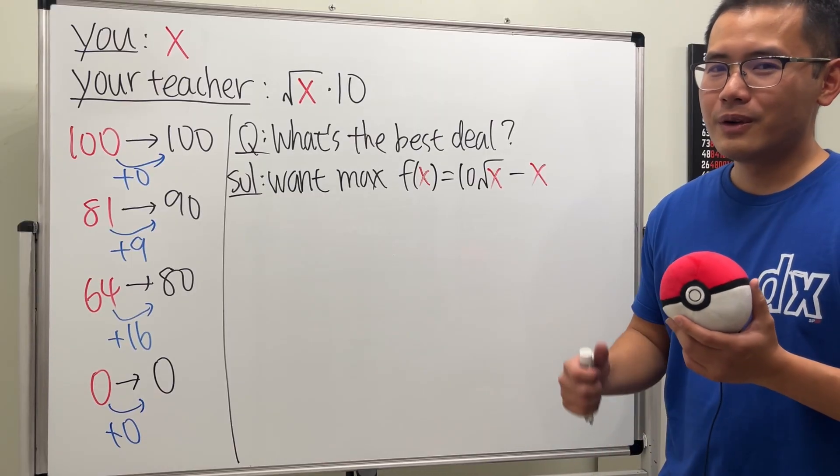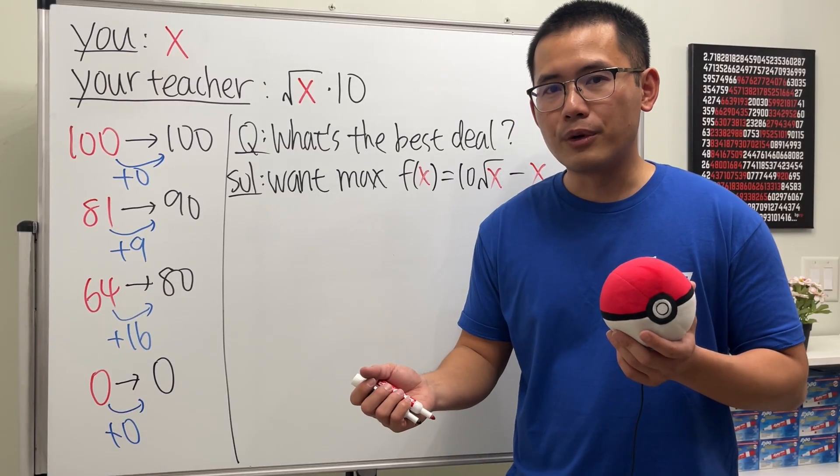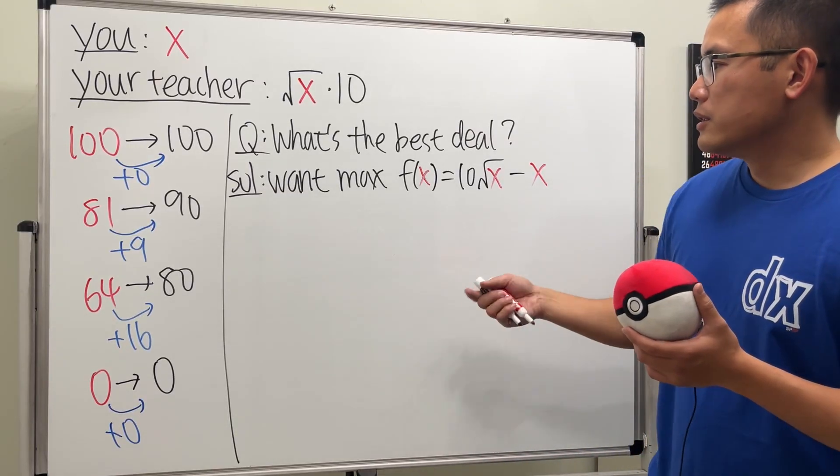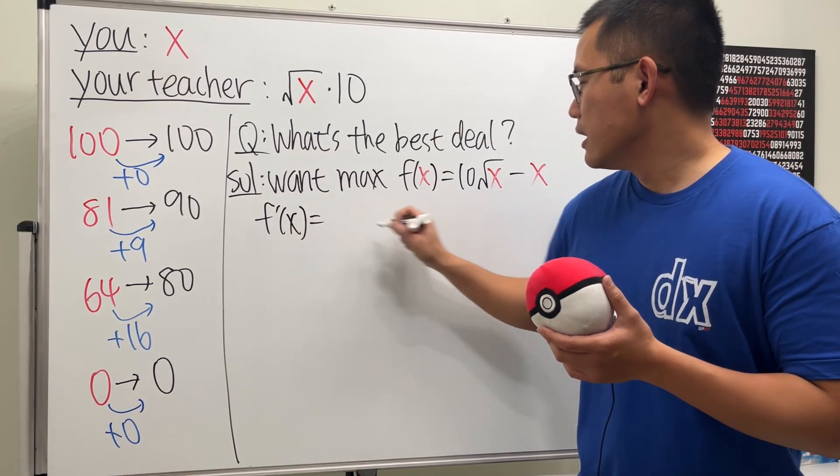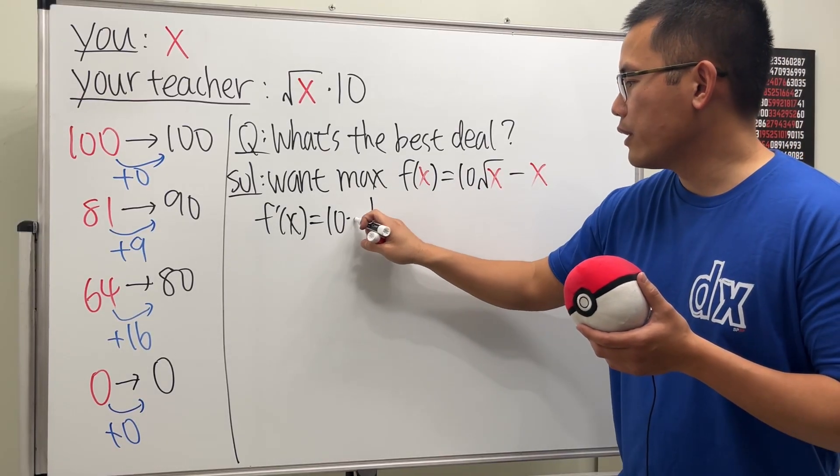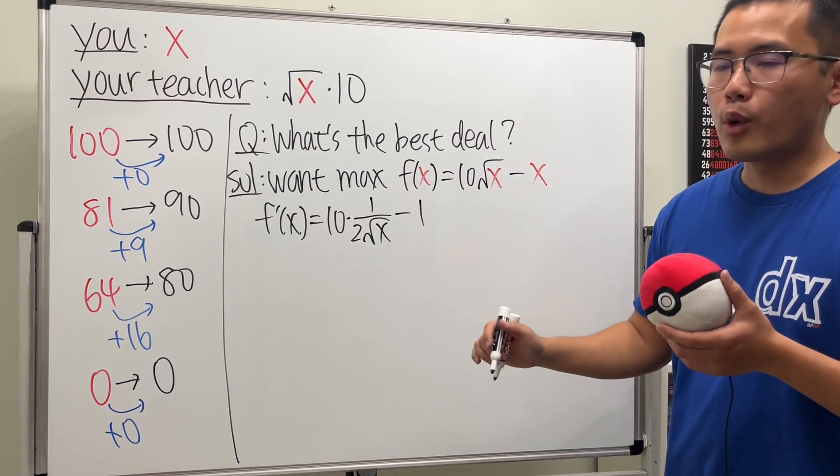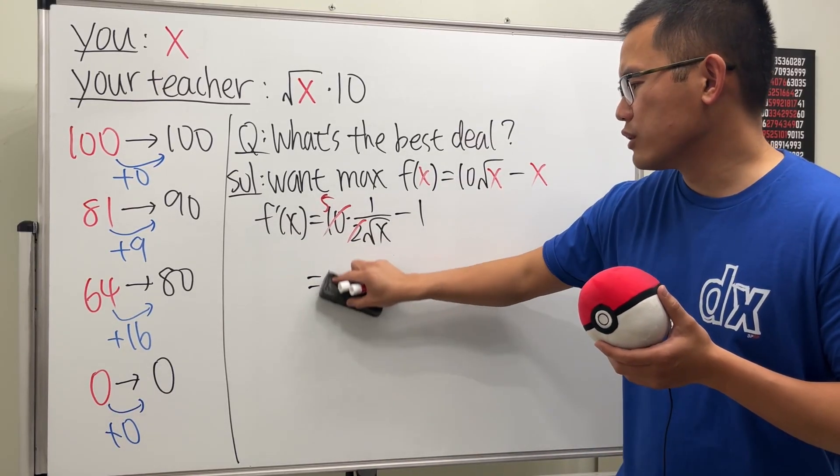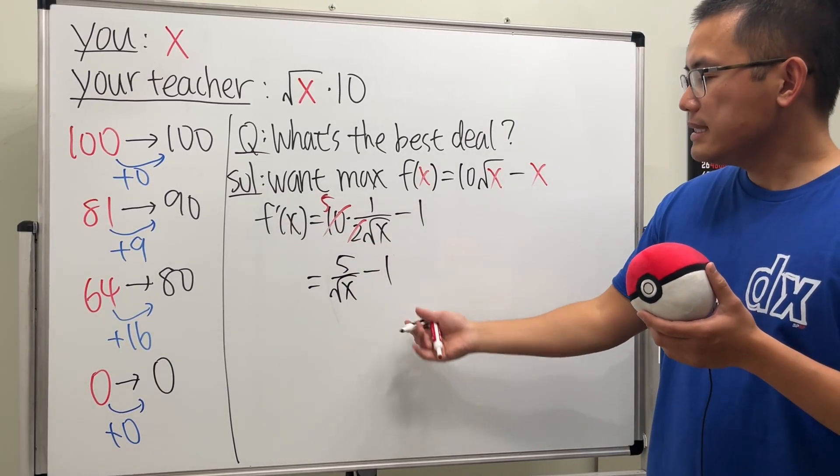But anyway, how do we find the maximum? Well, first, we need to get the derivative, and then we set it equal to 0 so we can find the critical numbers, and we test out if the critical number will give us minimum or maximum. So here we go. Let's get the derivative, and that will just be f prime of x. 10 is 10. It's just a multiple, so I'm going to write that down. And then the derivative of square root of x is 1 over 2 square root of x. And then the derivative of minus x is just minus 1. So that's what we have. And of course, we can simplify this real quick. So we get 5 times 1 over square root of x. Let me just write it as 5 over square root of x minus 1.